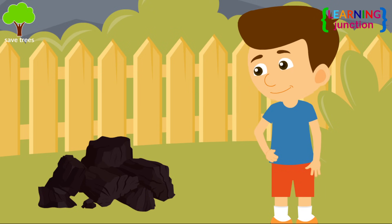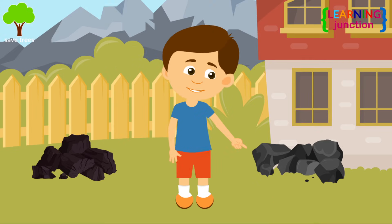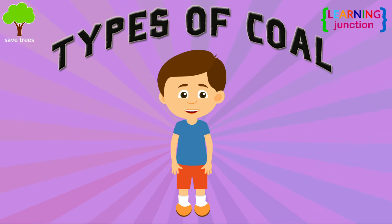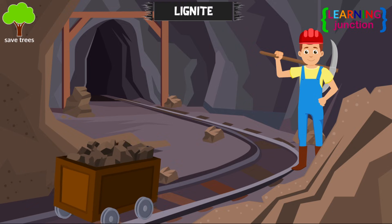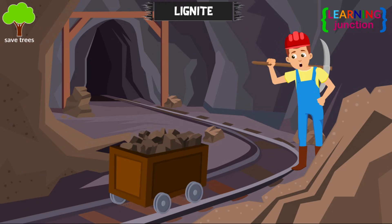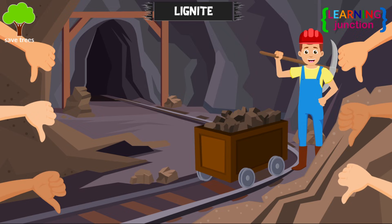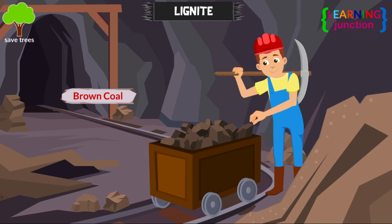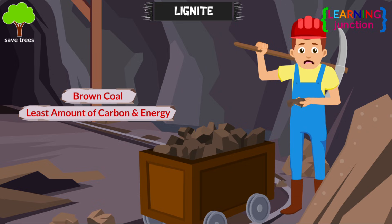This coal looks a lot different from this one. Let's have a look at the main types of coal. Lignite — this is the lowest rank of coal, often called brown coal. It has the least amount of carbon content and energy.